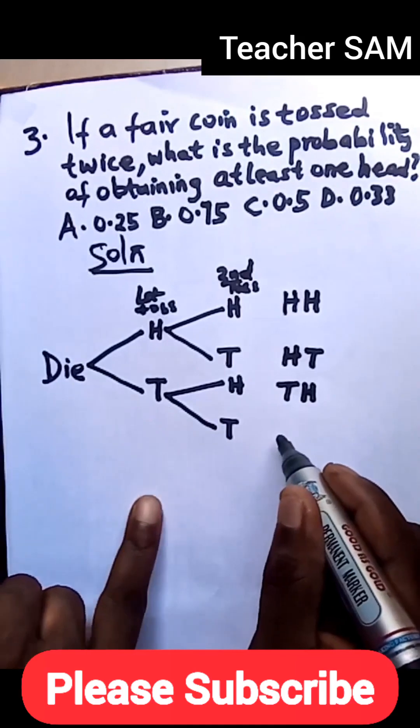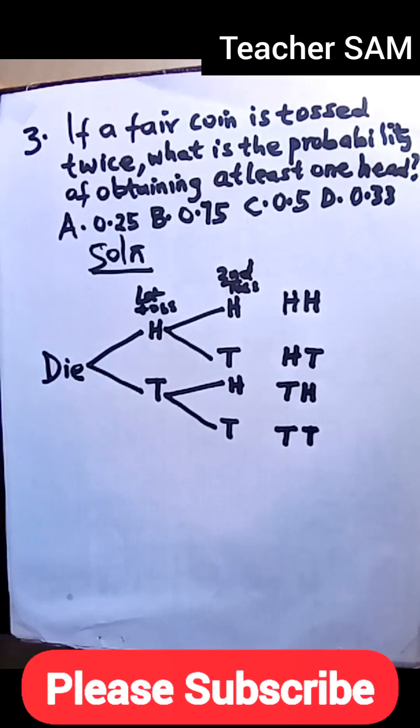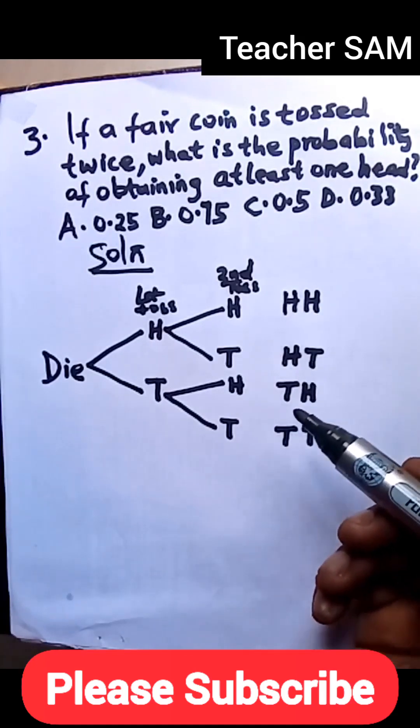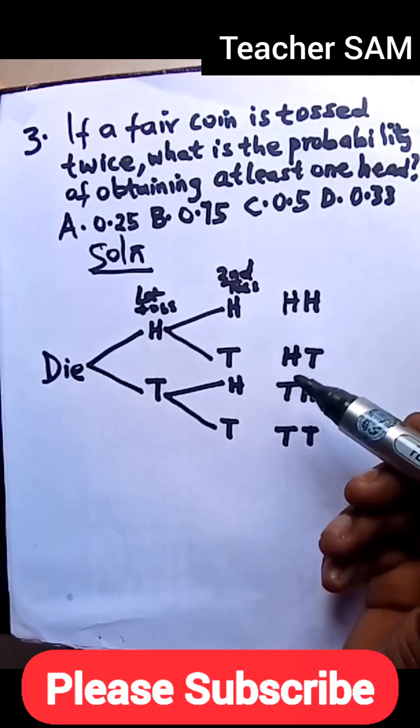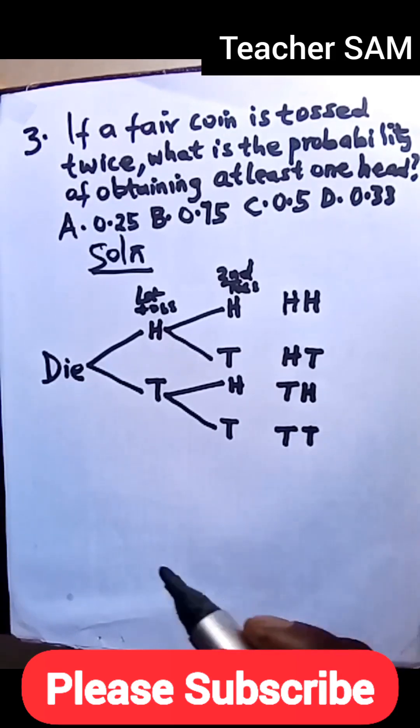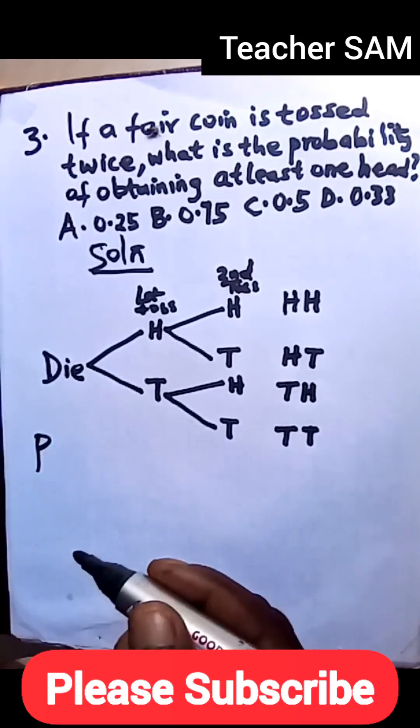We come to this line, we follow this line, we have a tail and a head, and a tail. Now we have four results when this coin is tossed twice. We have four results: one, two, three, four. A head and head, a head and a tail, a tail and a head, and a tail and a tail. That is four results.